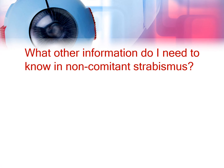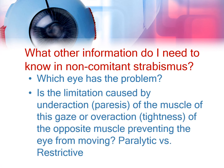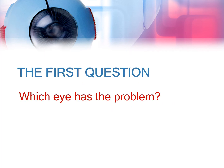Whenever we have a patient with non-comitant strabismus, we have two questions to answer. The first question is: which eye has a problem? The second question is whether the limitation is caused by under action or paresis of the muscle of that gaze, or an over action or tightness of the opposite muscle preventing the eye from moving — in other words, whether the cause is paralytic or restrictive.